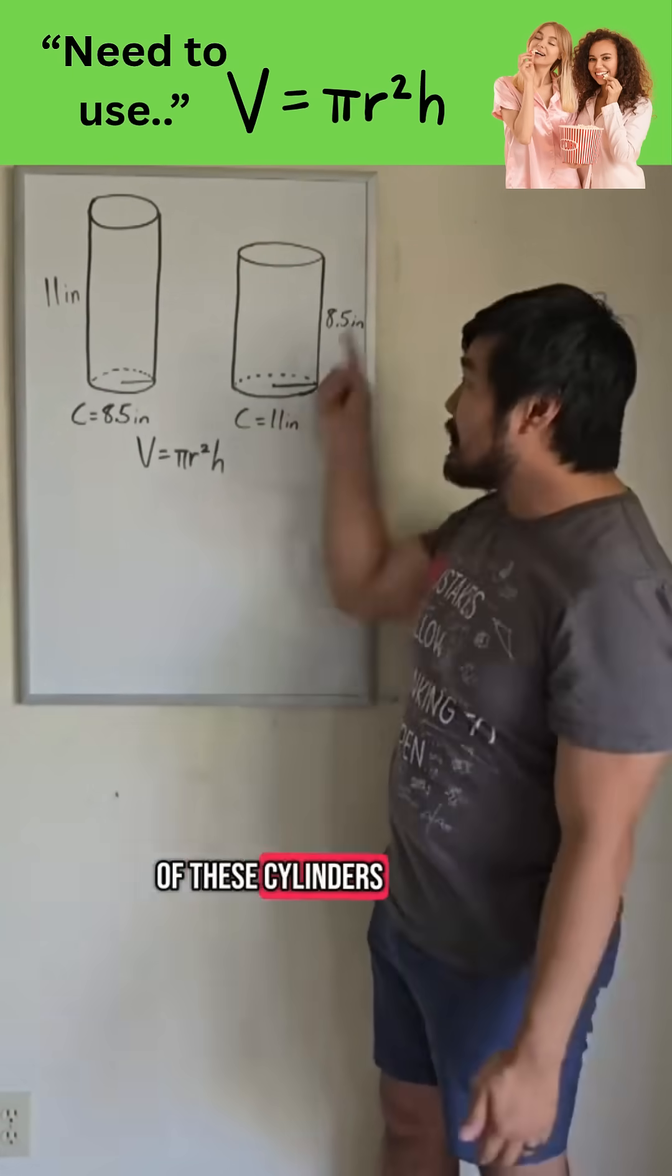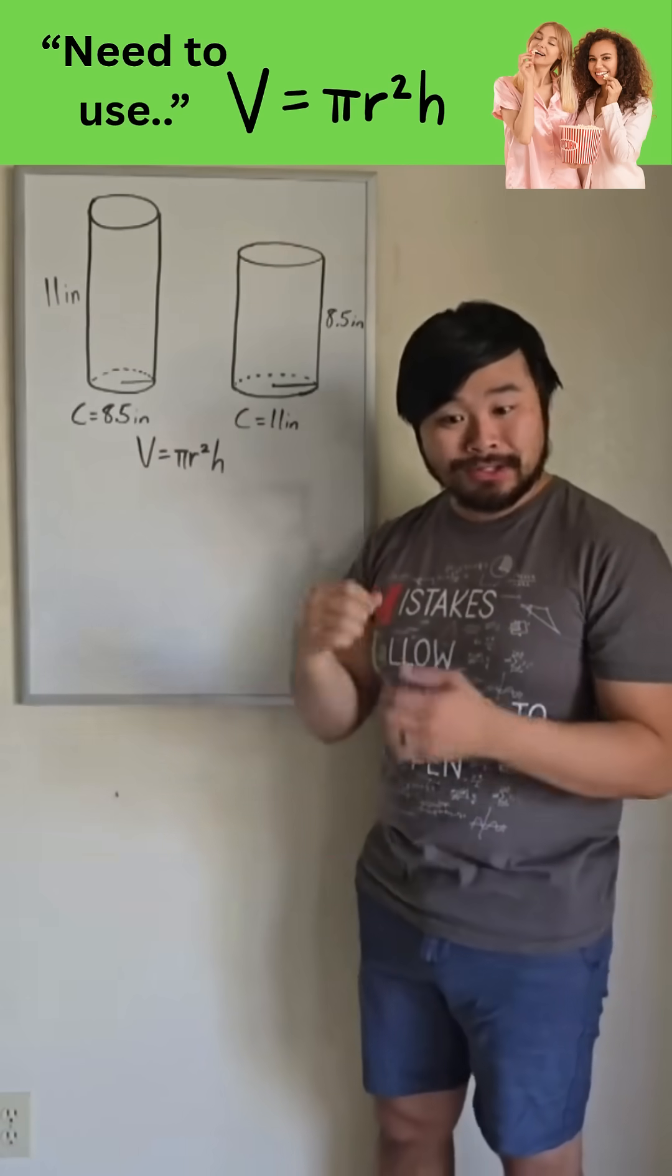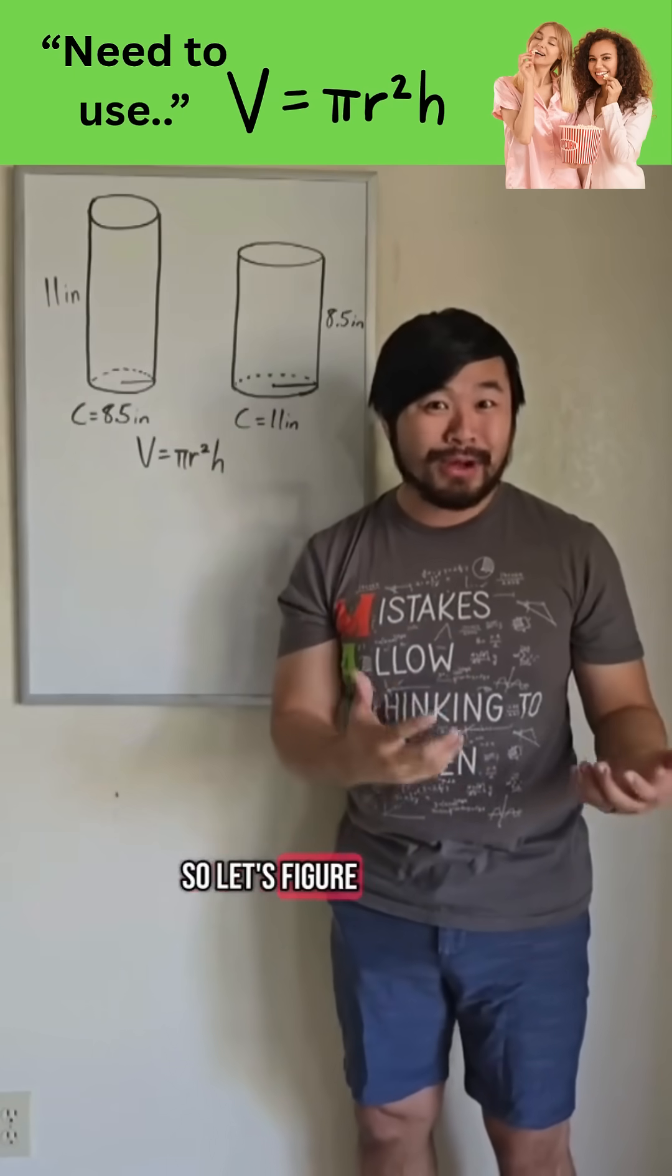Now for each of these cylinders, we have the height and the circumference of the base, so how can we find the radius? Well, circumference equals 2 pi times the radius. So let's figure out the radius.